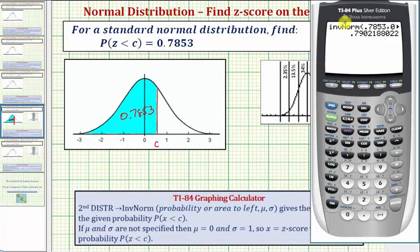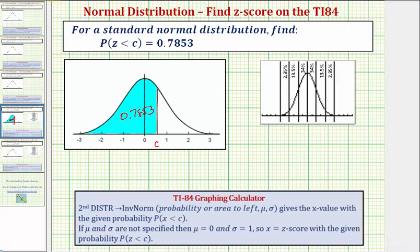This gives us the z-score, or the value of c that we're looking for. So c is approximately 0.7902, which means the probability of the z-score being less than 0.7902.